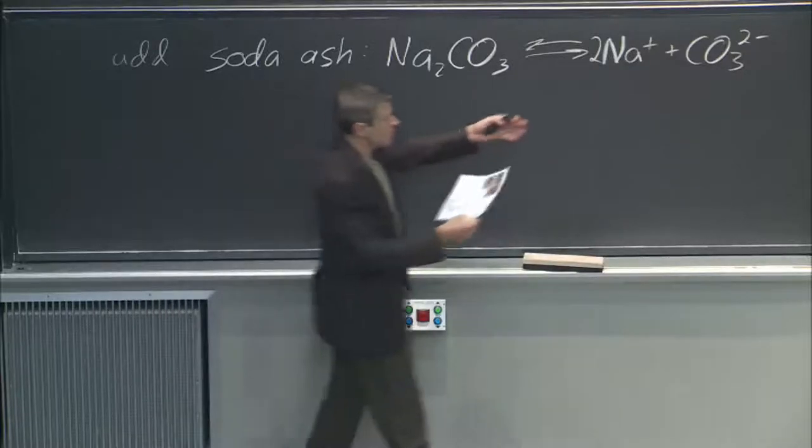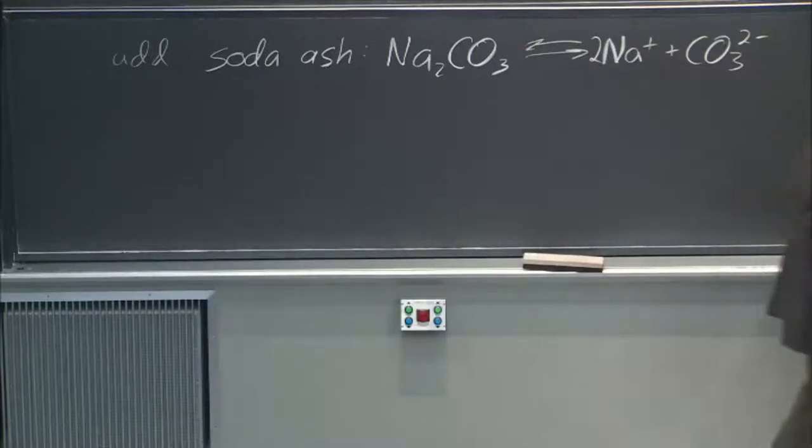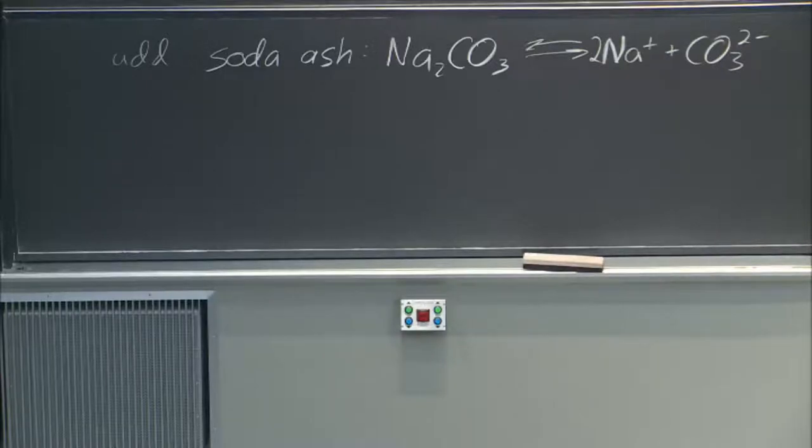This is all part of the stuff that we've been talking about, right? You're dissociating this to get ions in solution, but why do I want these ions? That's a water softener. Why?